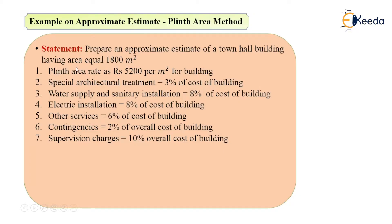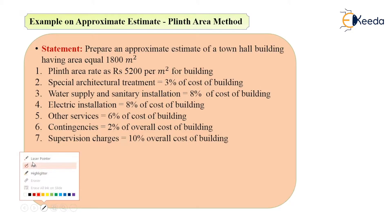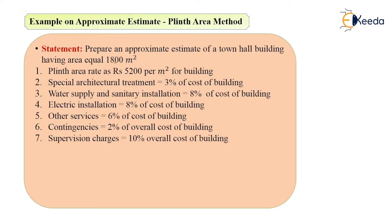The plinth area of the building is 1800 meter square and the plinth area rate is 5200 per meter square for the building. They have given so many data — let's see them one by one. The area is 1800 meter square and the plinth area rate is 5200 per meter square for the cost of building.